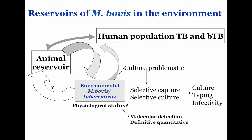The two main offenders in tuberculosis are Mycobacterium bovis and Mycobacterium tuberculosis. Bovis has a wider host range and is a more recently evolved organism from the progenitor that tuberculosis evolved from. So human tuberculosis probably evolved first and then bovis went off from that.